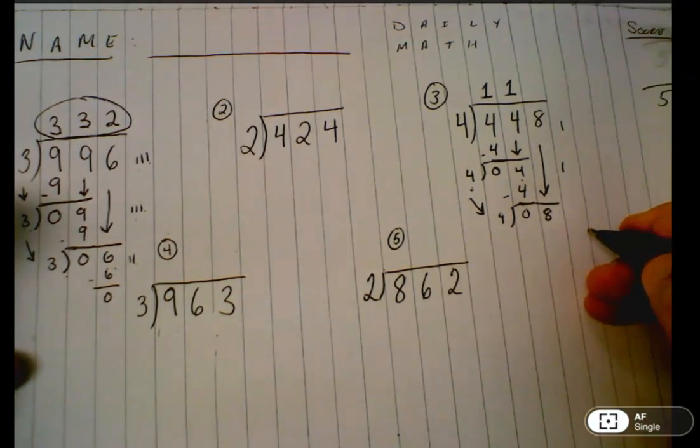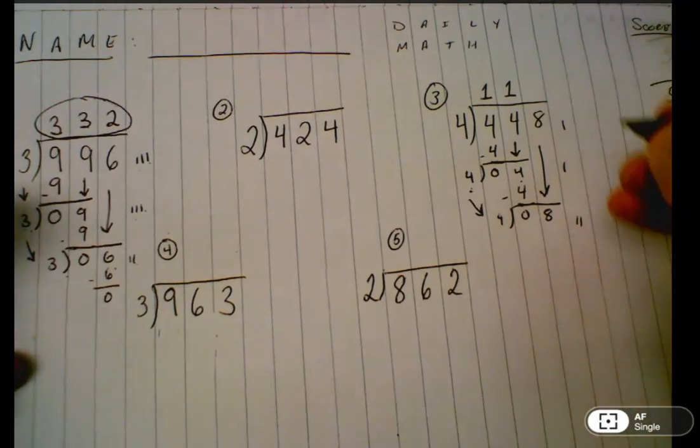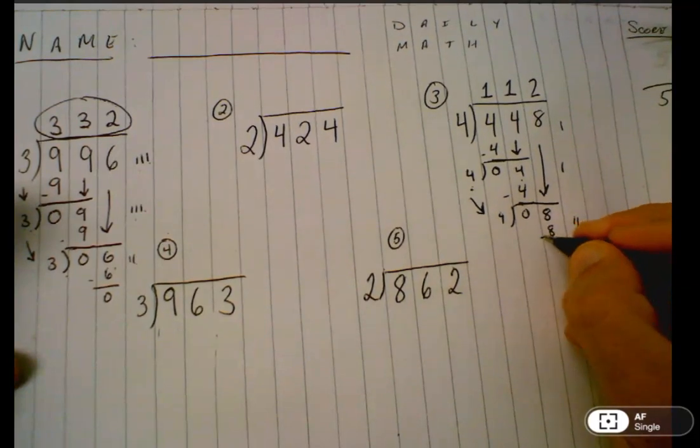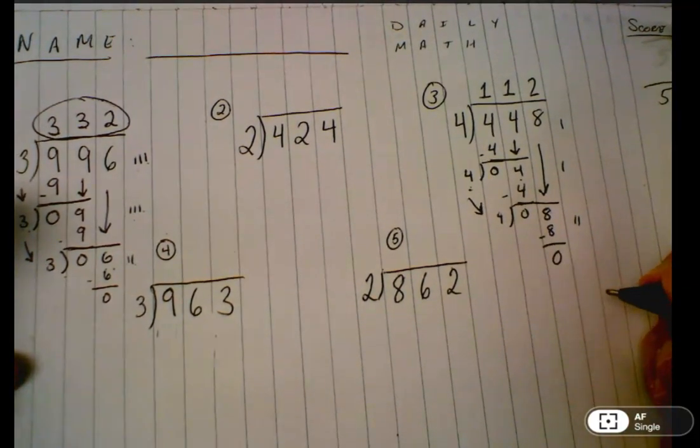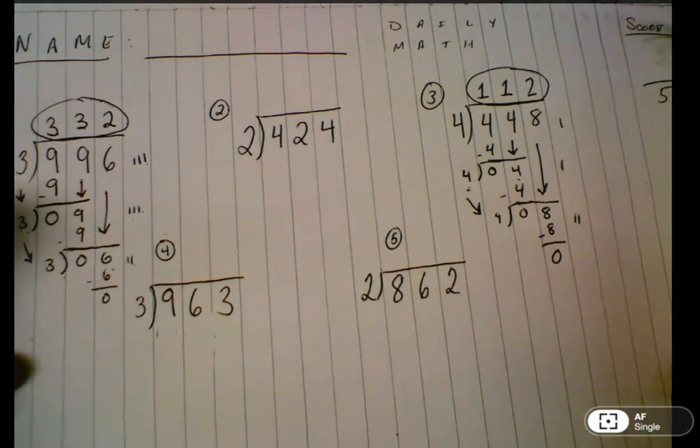And repeat one more time. How many times can you skip count by four and get close to eight? Twice. That goes up there. Four times two is eight. Subtract, and that gives you the remainder of zero. The answer to number three is 112 with a remainder of zero.